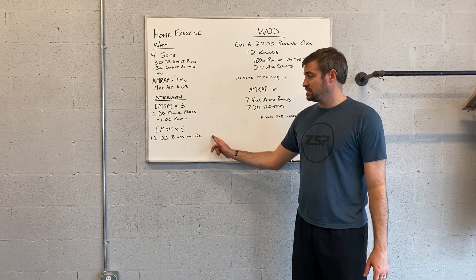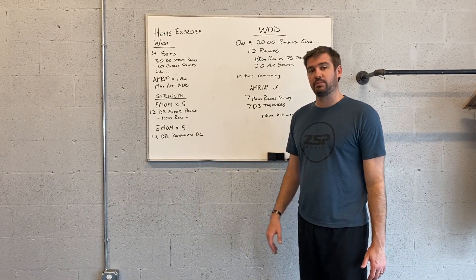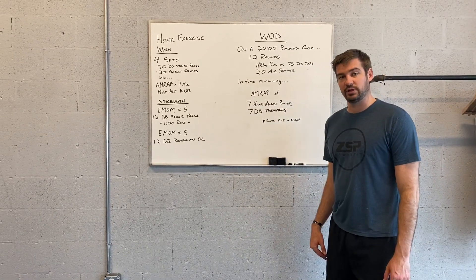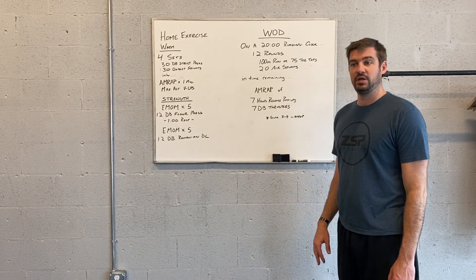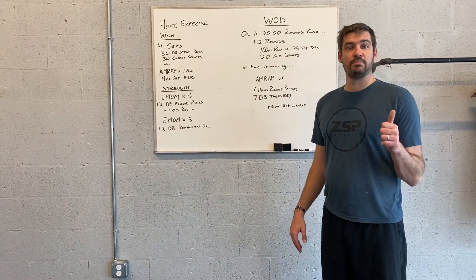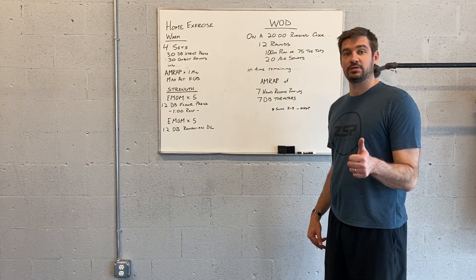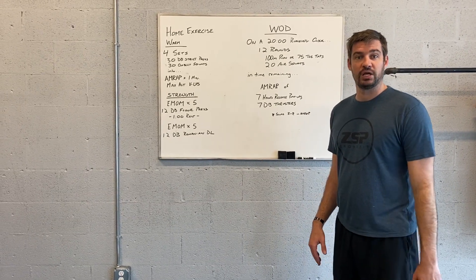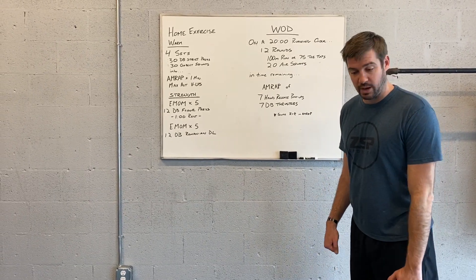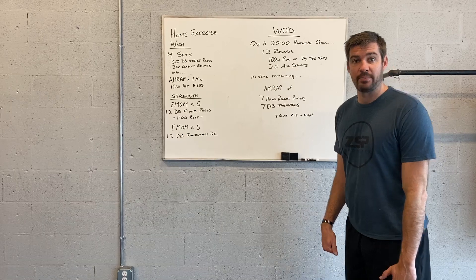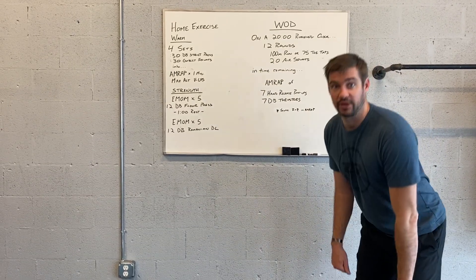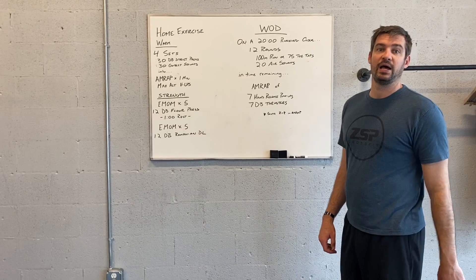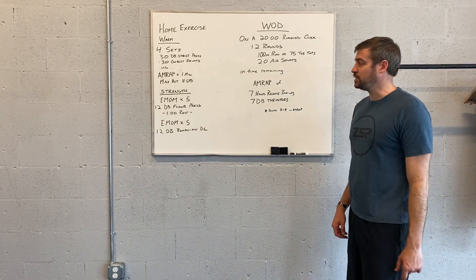Rest a minute and do the same pattern but with 12 Romanian deadlifts, which is just a stiffer legged deadlift limited by maintaining spinal position and vertical shin. So we're gonna be coming from the top down to kind of a little bit below the knees, focusing on keeping a straight spine and straight shin.